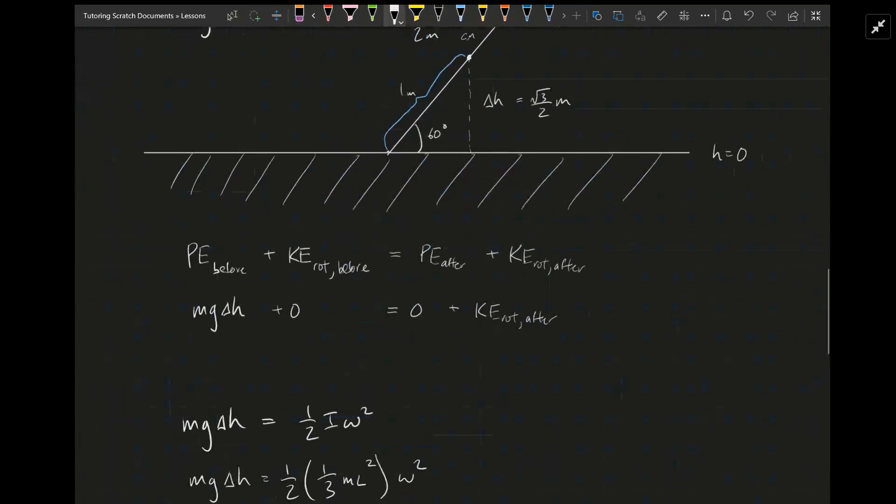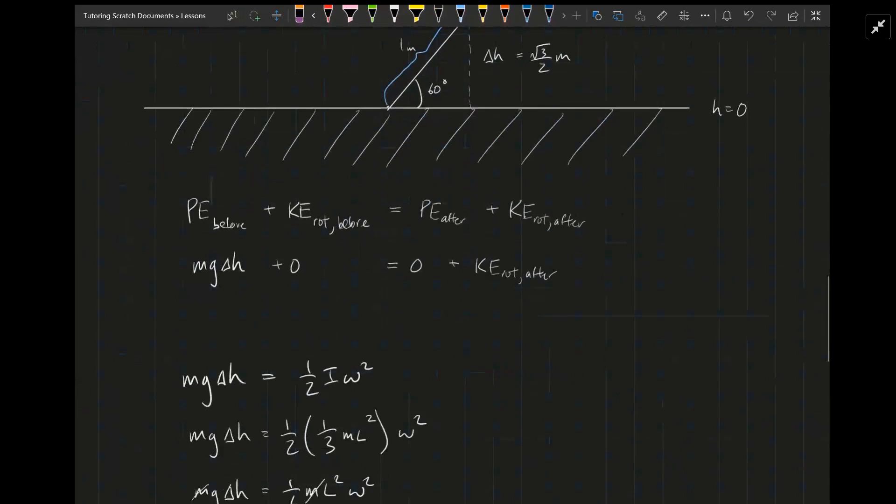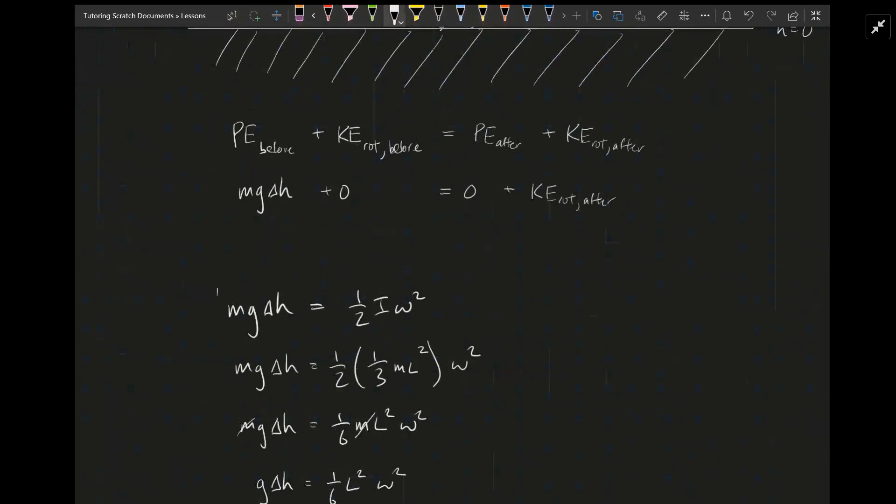Rotational kinetic energy is one half I omega squared. We'll come back to that. So we have mgh equals one half I omega squared.